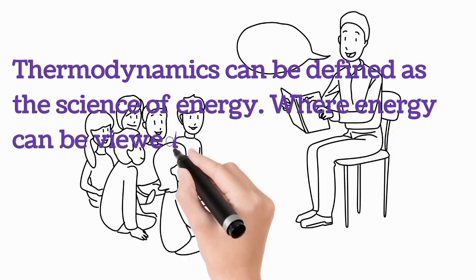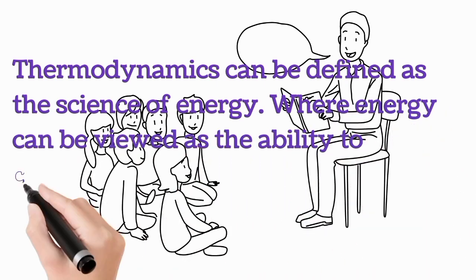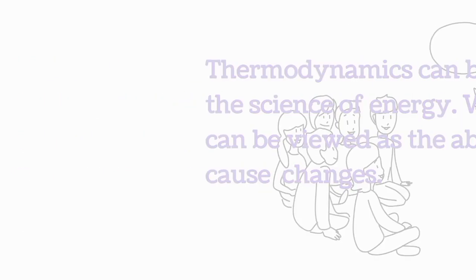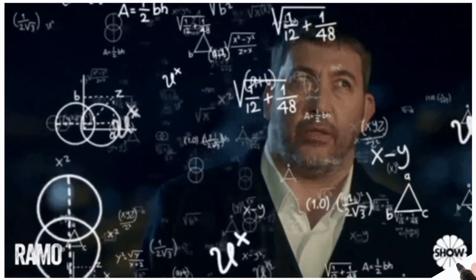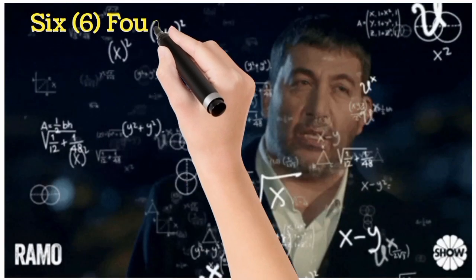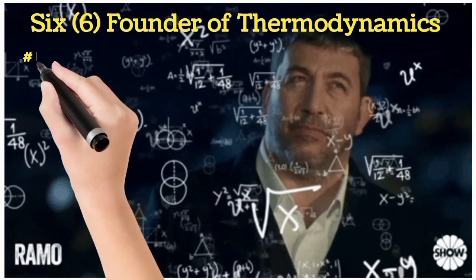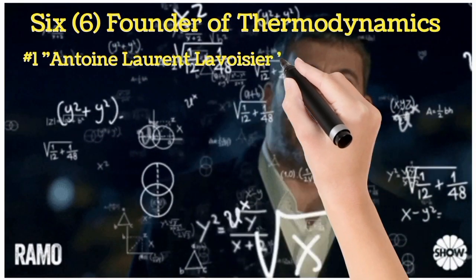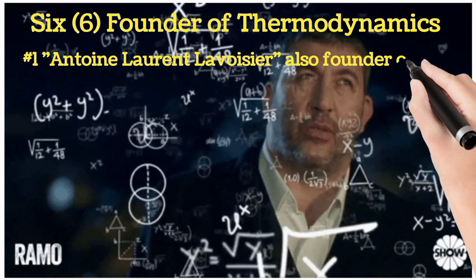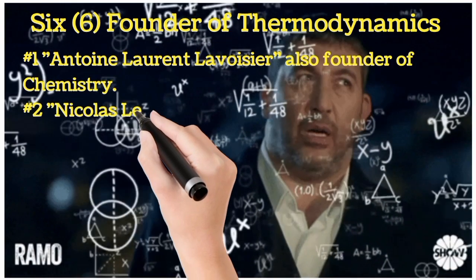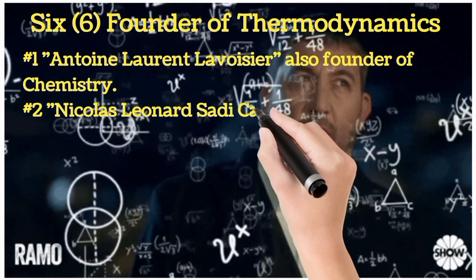There are six founders of thermodynamics. Number one, Antoine Laurent Lavoisier, founder also of chemistry. Number two, Nicolas Leonard Saadi Carnot, a French, with the naming of a theoretical thermodynamic cycle after him.